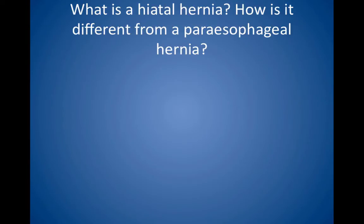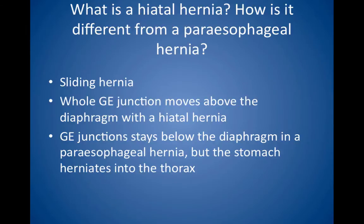What is a hiatal hernia? How is it different from a paraesophageal hernia? A hiatal hernia is a sliding hernia, which means that the whole gastroesophageal junction moves above the diaphragm, pulling the stomach with it. This common and benign finding may predispose to GERD. In a paraesophageal hernia, the gastroesophageal junction stays below the diaphragm, but the stomach herniates through the diaphragm into the thorax. This type of hernia is uncommon but serious. It may become strangulated and should be repaired surgically.